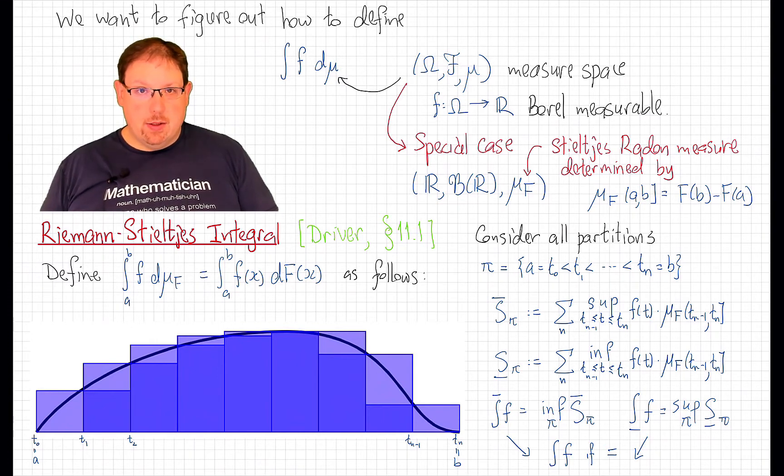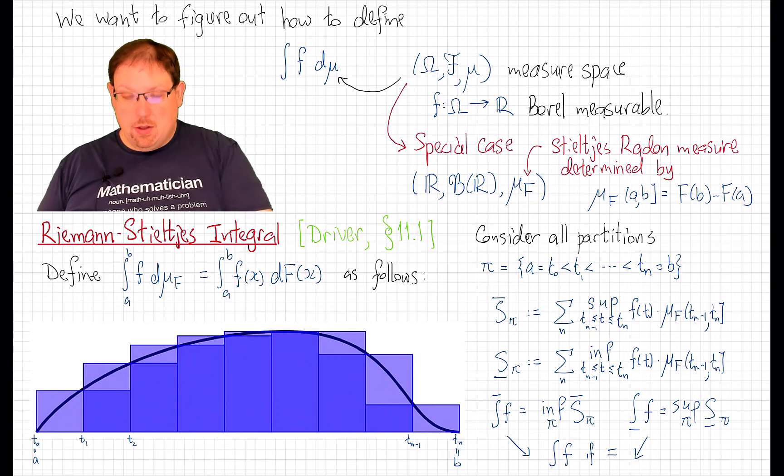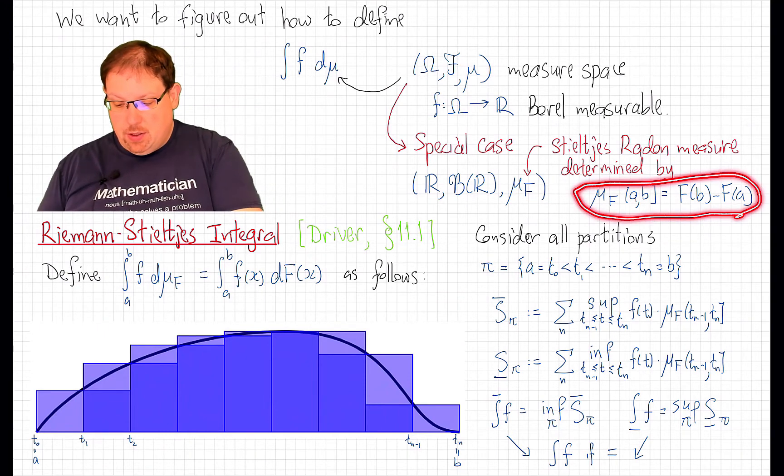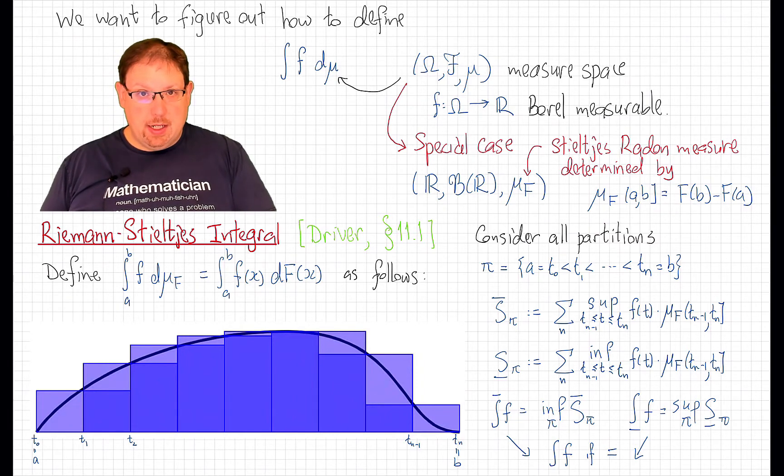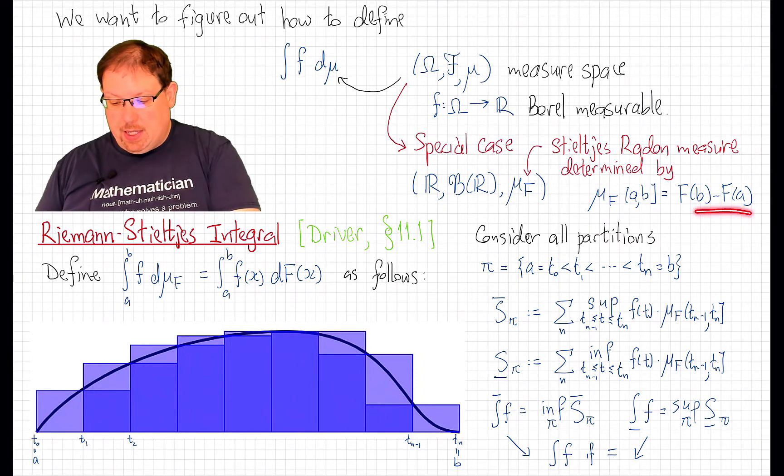We characterize those as being associated to Stieltjes integrators, that is, the radon measure of any half-open interval can be calculated by the difference of some non-decreasing right continuous function at the endpoints.